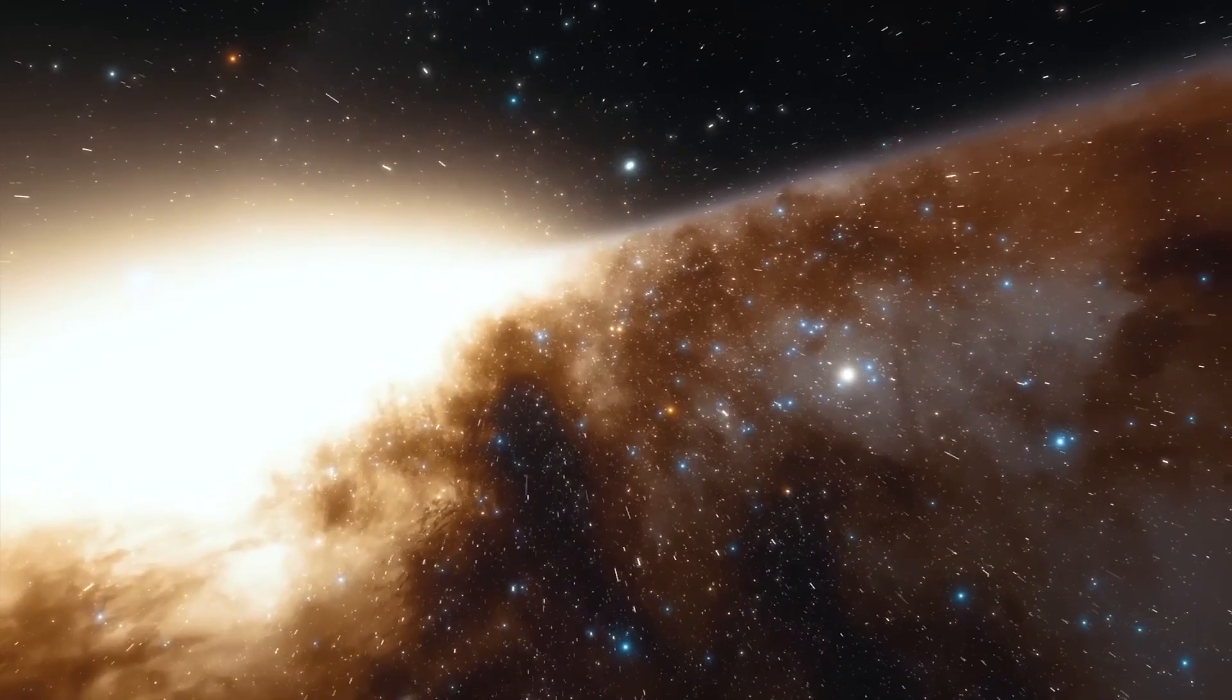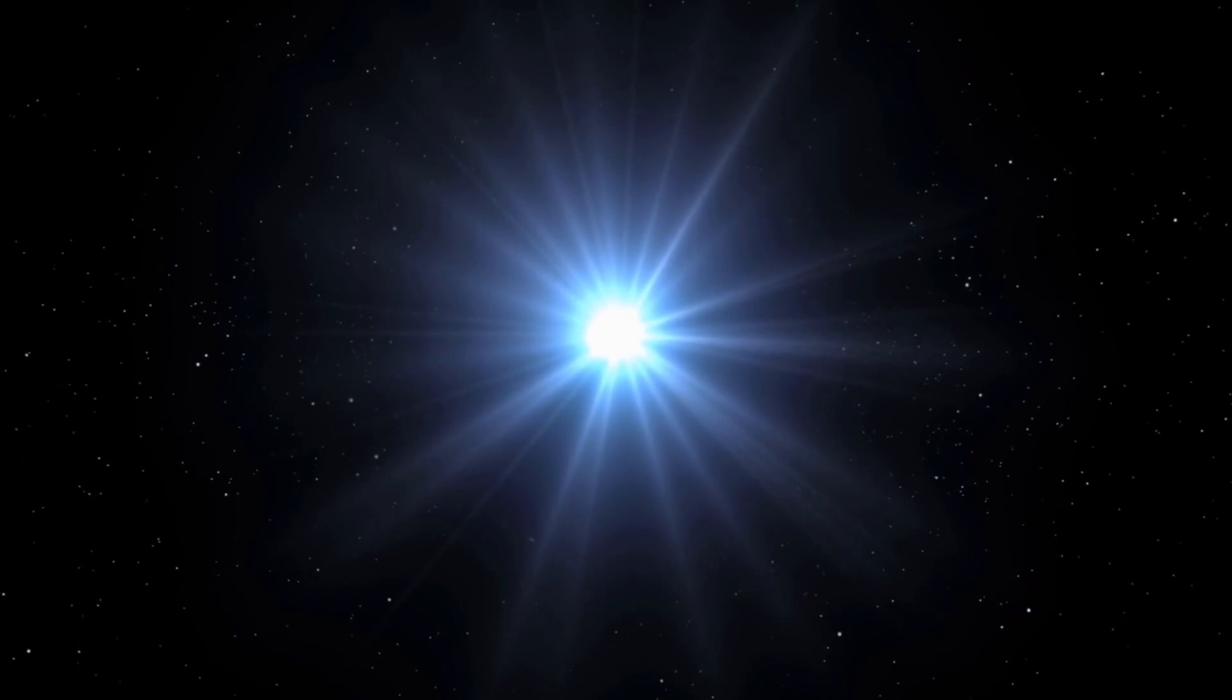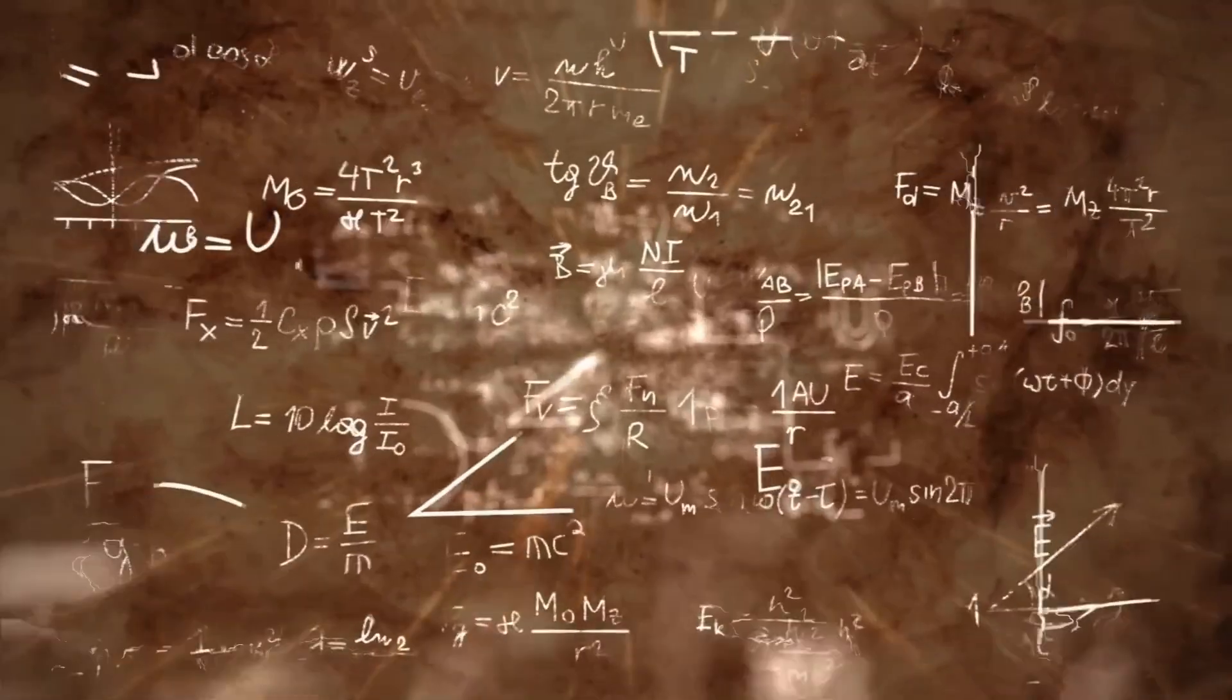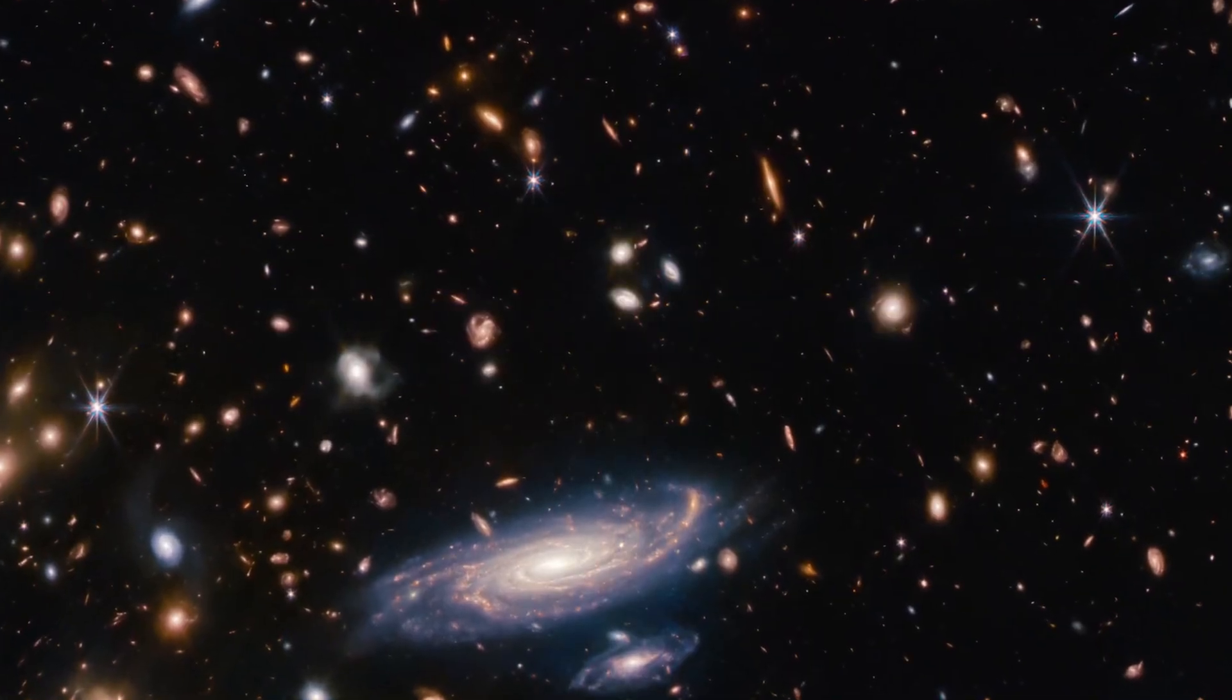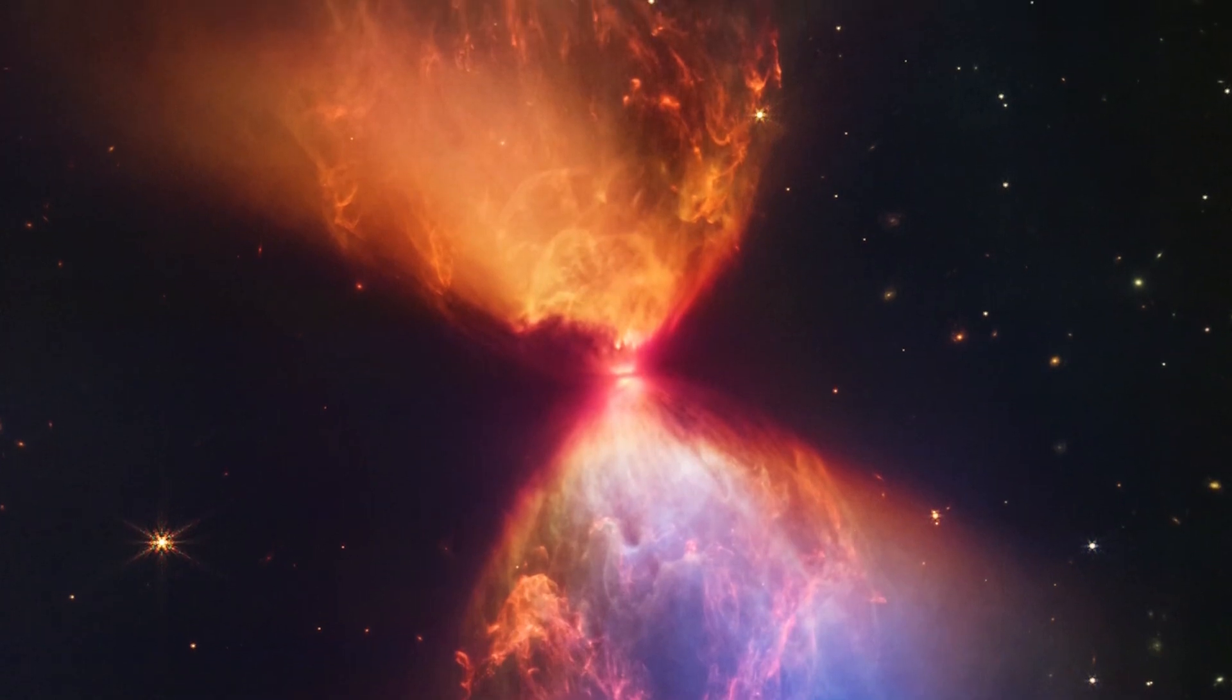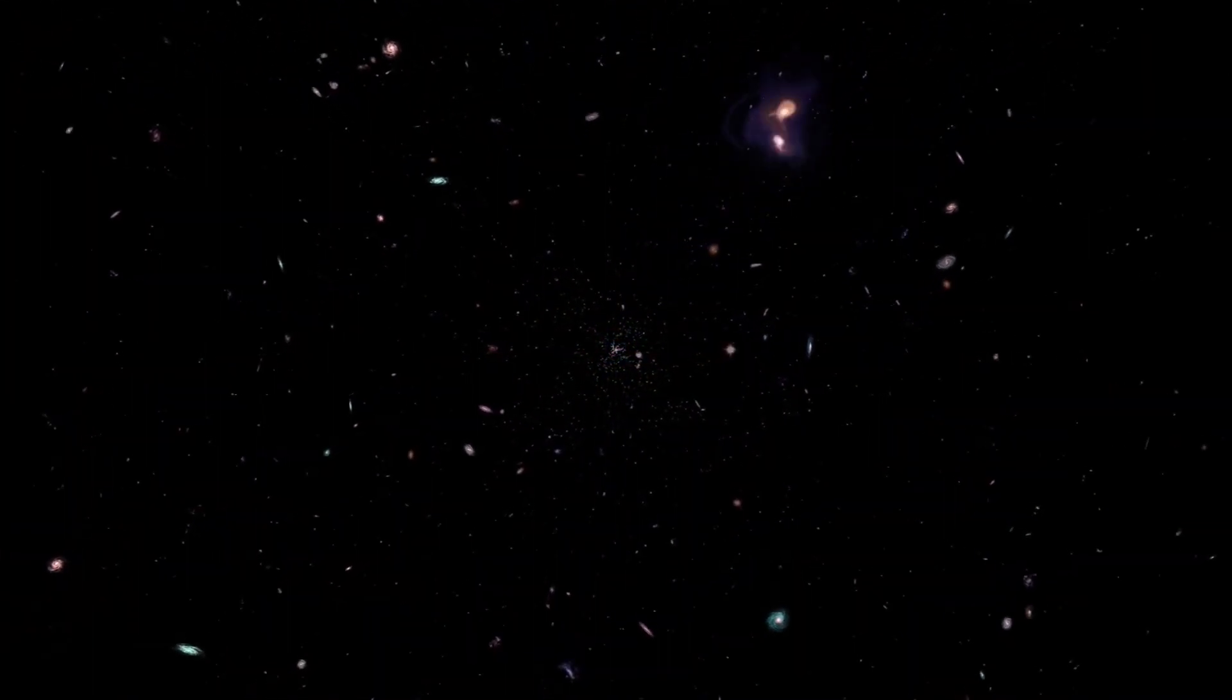Moreover, the smoothness of these galaxies is totally unexpected. According to the Big Bang Theory, galaxies should show irregularities and variations in their structures due to the dynamics of their formation and evolution. However, the images reveal unusually smooth galaxies without the level of complexity and roughness that one would normally expect to see in galaxies of their age. This defies the expected time sequence for the formation and evolution of galaxies within the framework of the Big Bang Theory.